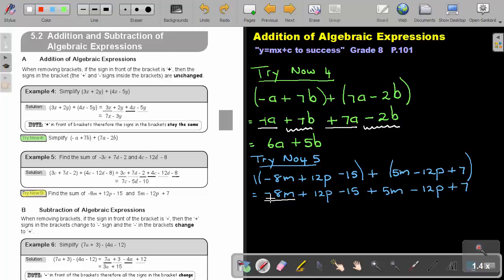There's a negative 8M, and there's a positive 5M. There's a 12P and a minus 12P, additive inverse, so they can cancel. A negative 15 and plus 7. So let's quickly look at the result.